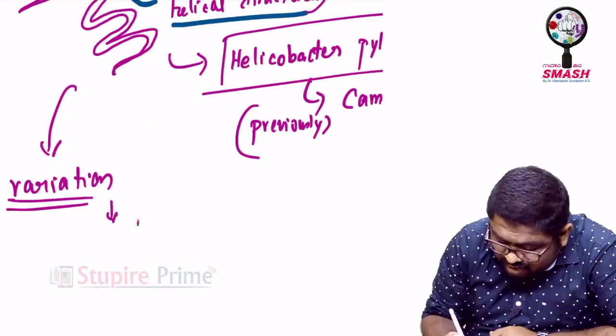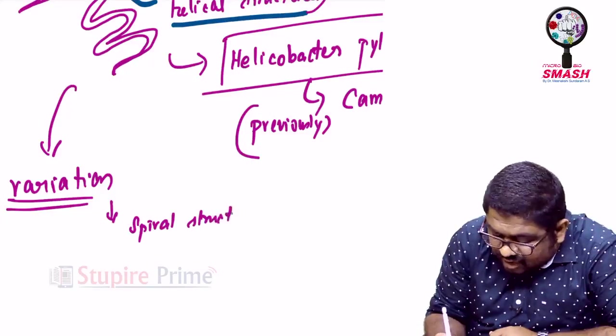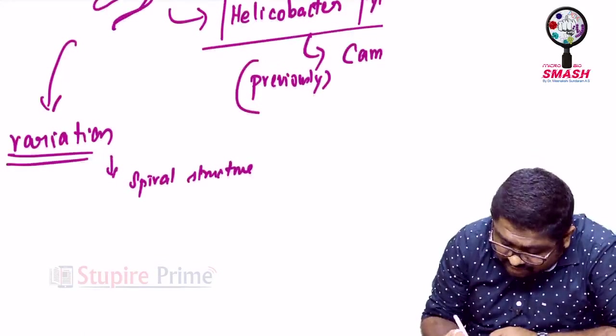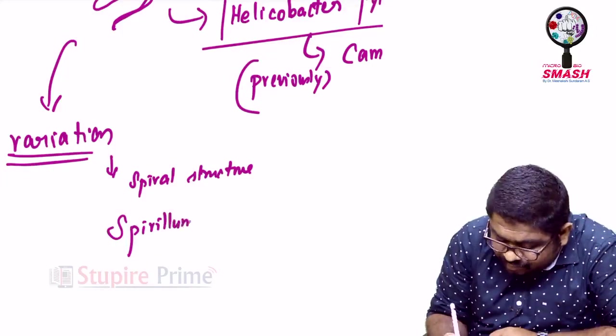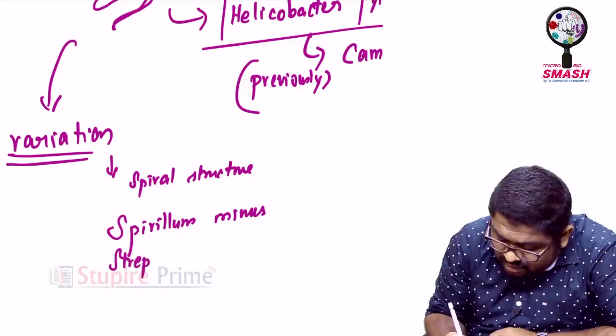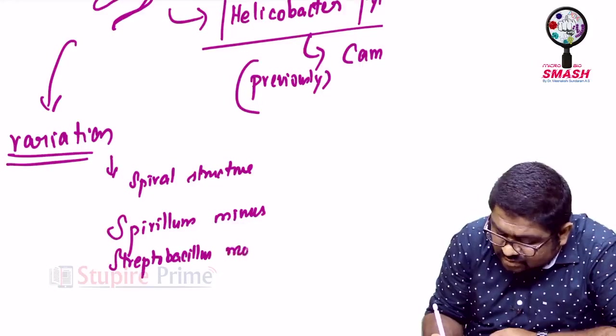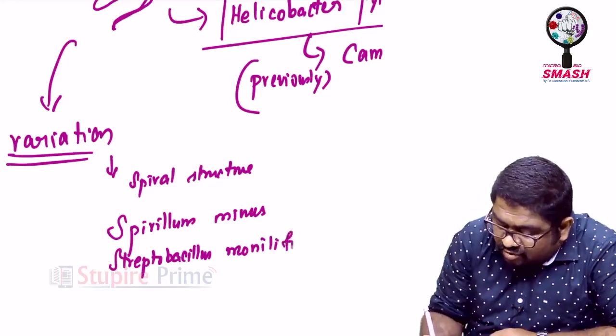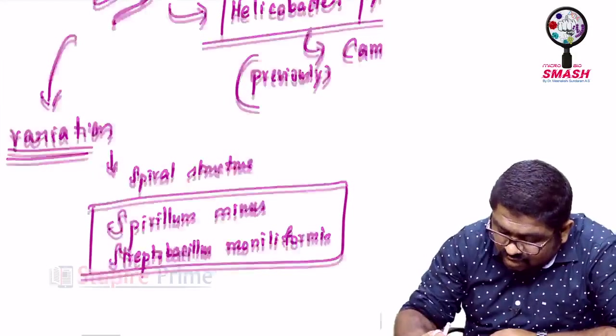Variation of the helical structure can be extra-helical called as Spiral Structure. And the Spiral Structure organisms have another name called as Spirillum minus and Streptobacillus moniliformis.